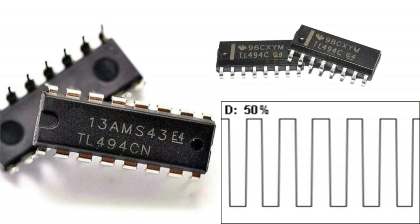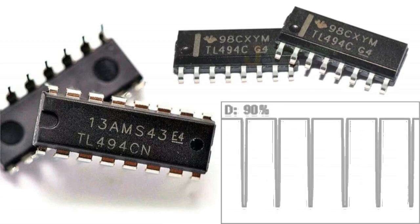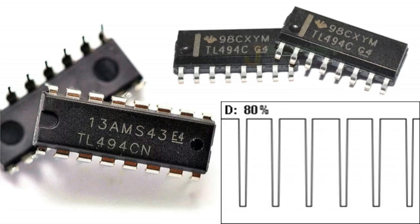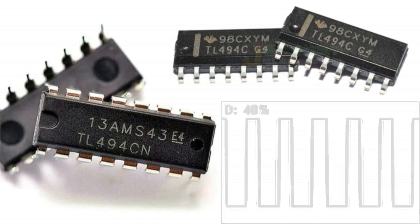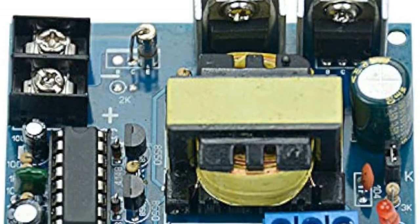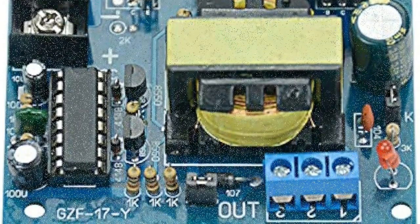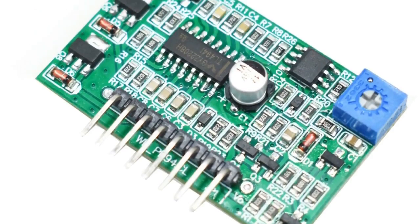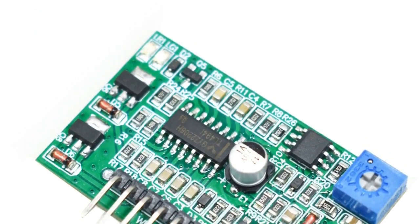The TL494 is a versatile PWM control IC which can be applied in many different ways in electronic circuits. In this video we discuss in detail the main functions of the IC and also how to use it in practical circuits.